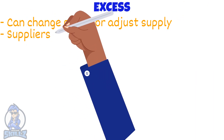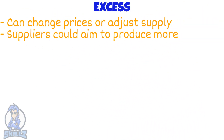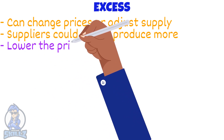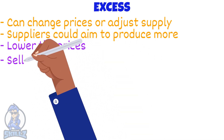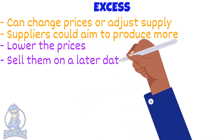To fix excess demand or supply, sellers can change the price or adjust supply. If there is excess demand, suppliers could aim to produce more by employing more resources. If there is excess supply, producers could either lower their prices or hold on to supplies and sell them at a later date.